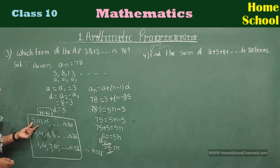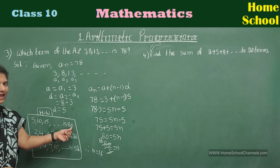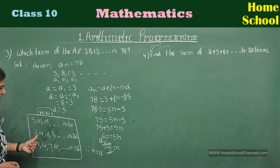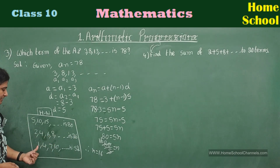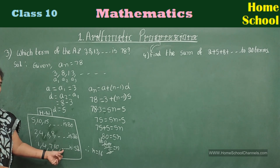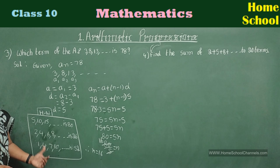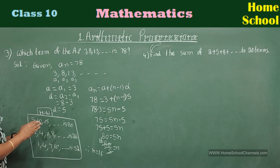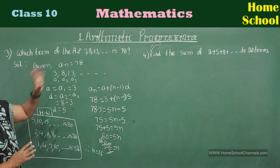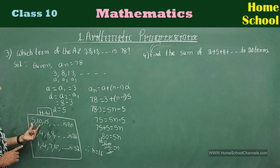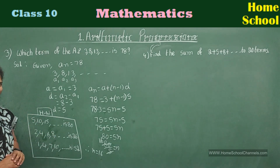Here are the homework problems. For the AP 5, 10, 15, and so on — which term is 80? For the AP 2, 4, 6, 8, and so on — which term is 26? For the AP 1, 4, 7, 10, and so on — which term is 52? Read the original complete question: 'Which term of the arithmetic progression is [value]?' — make sure you understand the question.